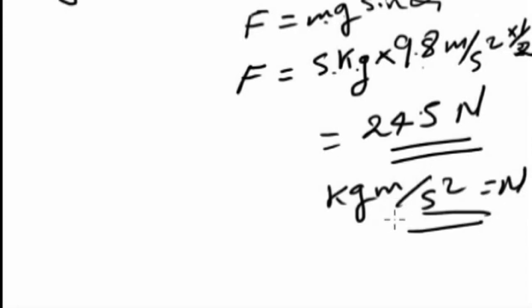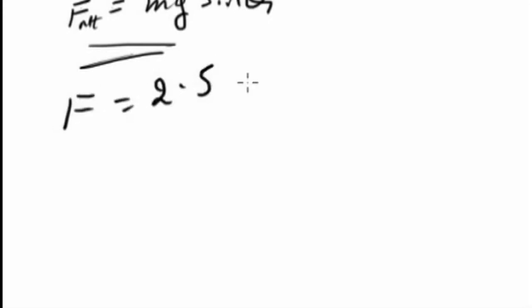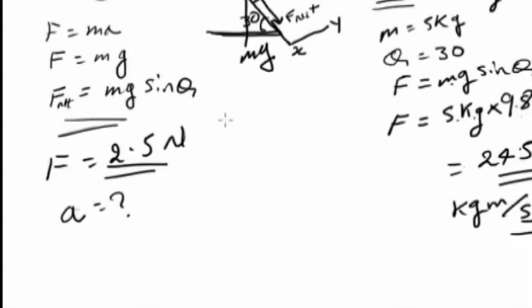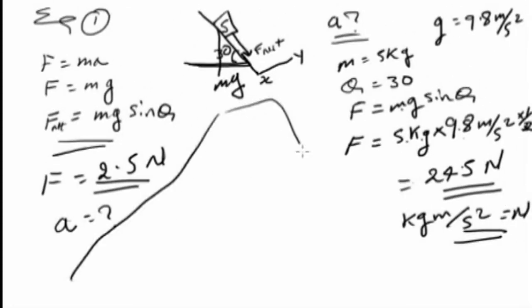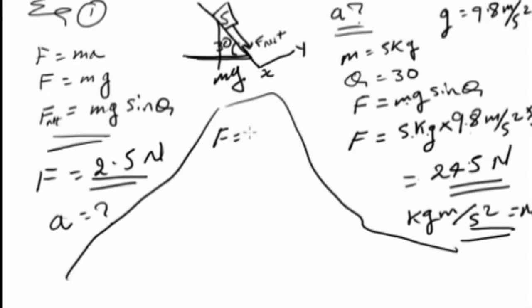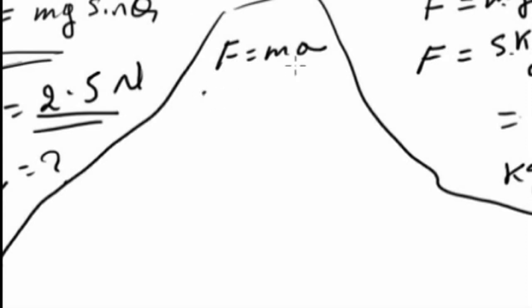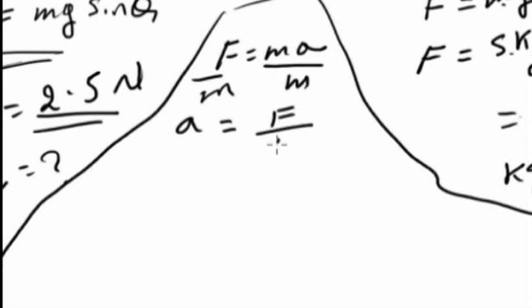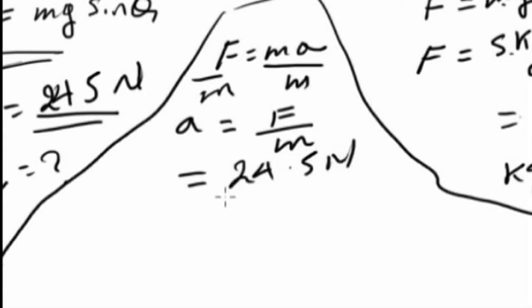So the force is 24.5 Newtons. The unit: kilogram times meter per second squared is equal to Newton. So the net force is 24.5 Newtons. Now, acceleration equals force over mass: 24.5 Newtons over 5 kilograms.